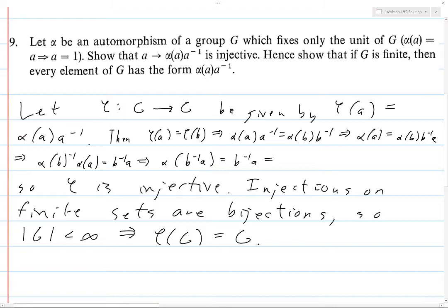But now, we know that alpha fixes the unit of G. And so this means that B inverse A equals one, i.e. A equals B. And so if phi of A equals phi of B, then A equals B. And that is precisely what you need to check in order to prove that a function, such a function phi, is injective.